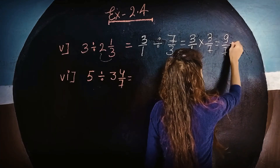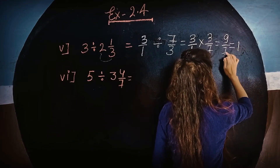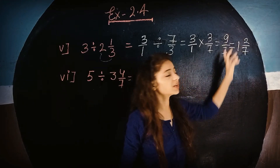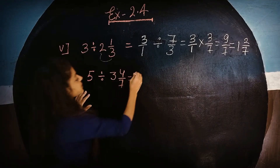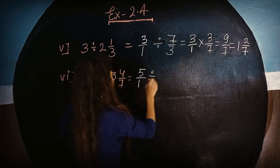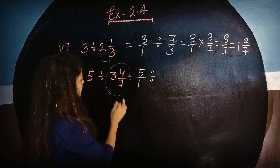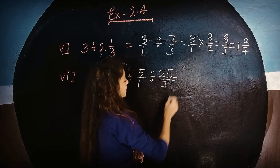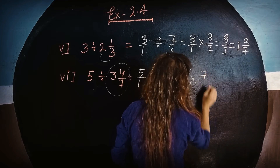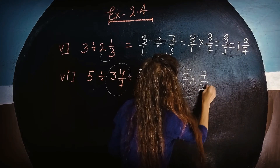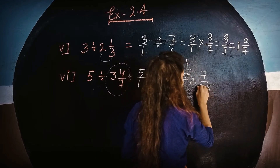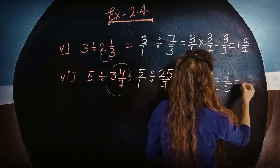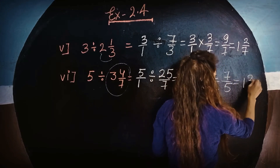Now we convert 9 upon 7 to a mixed fraction: 7 goes into 9 once with remainder 2, giving 1 whole 2 upon 7. For the sixth part, we have 3 whole 4 upon 7: converting gives 25 upon 7. The reciprocal gives 7 upon 25, then simplifying by dividing 5 gives 2 upon 5. So the answer is 1 whole 2 upon 5.